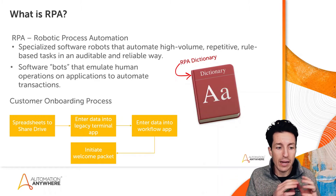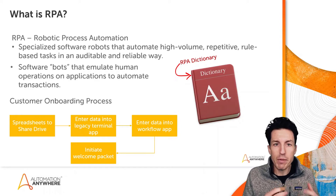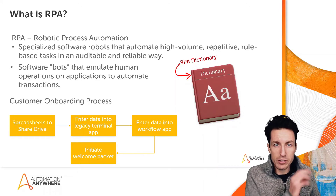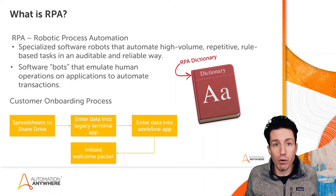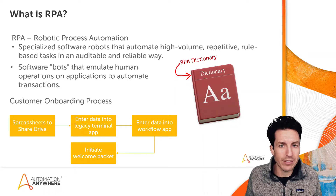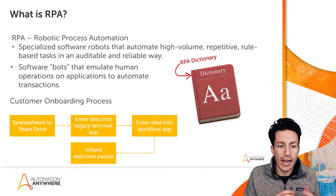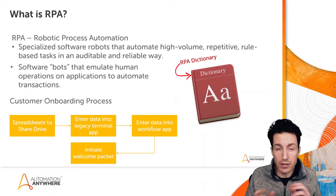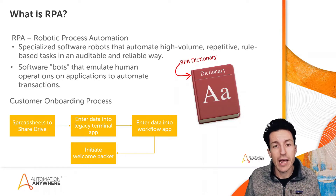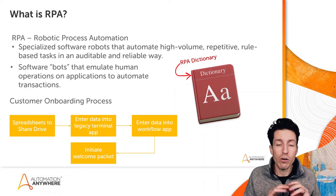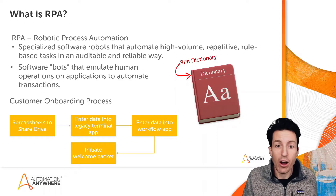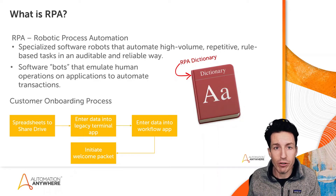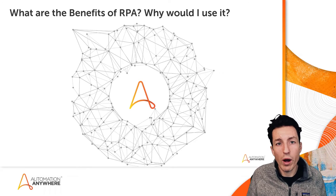Part of where a bot adds a lot of value here is reliability. If a person is given a spreadsheet and told to enter data into two apps and start a welcome packet, at first they might copy and paste. But eventually they'll think they remember a zip code and type it instead — and now they're sometimes copying, sometimes pasting, sometimes typing, which introduces the possibility of keystroke errors. With bots, those steps are automated in an auditable and reliable way — done the exact same way every single time.